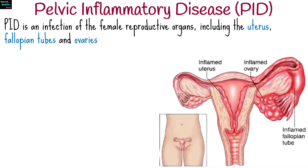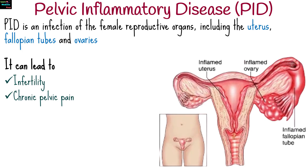Pelvic inflammatory disease is an infection of the female reproductive organs, including the uterus, fallopian tubes, and ovaries. It is a serious condition that can lead to complications such as infertility, chronic pelvic pain, and ectopic pregnancy if left untreated.